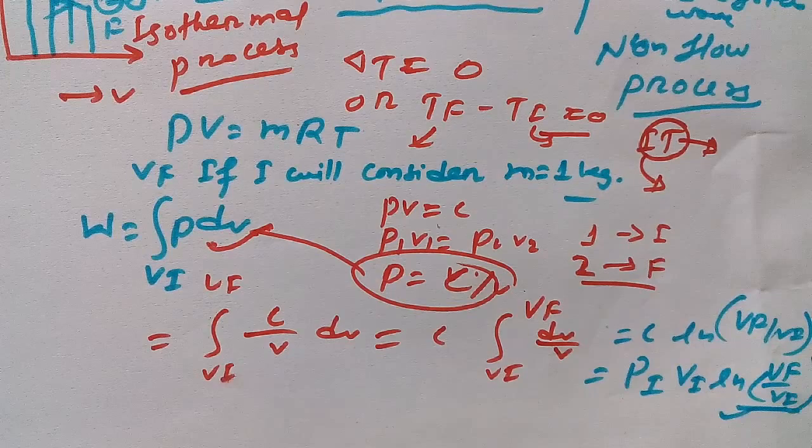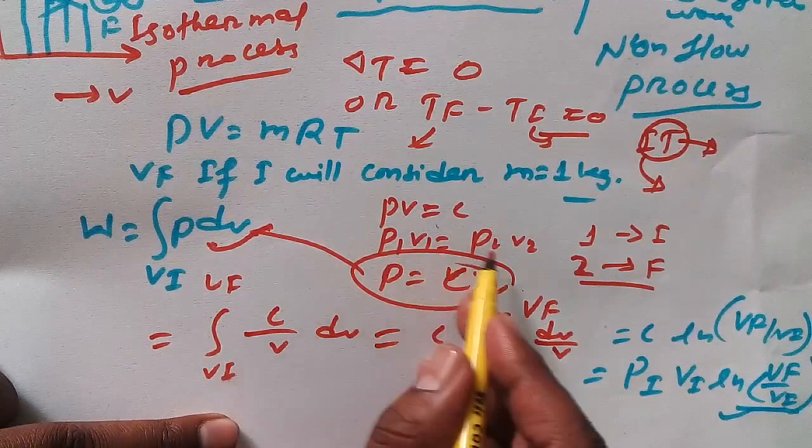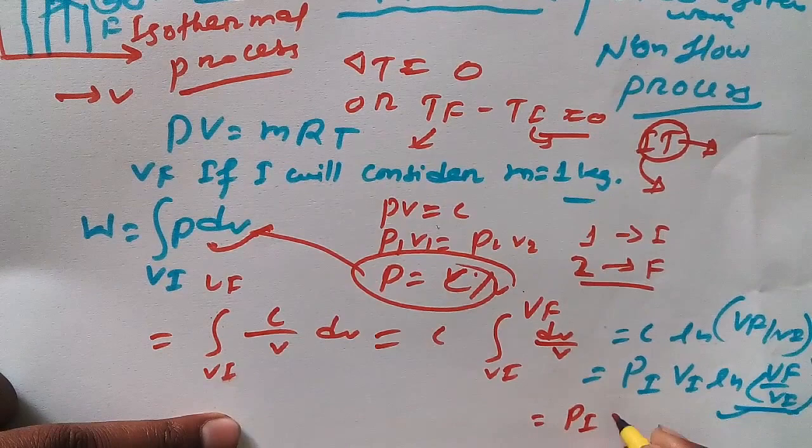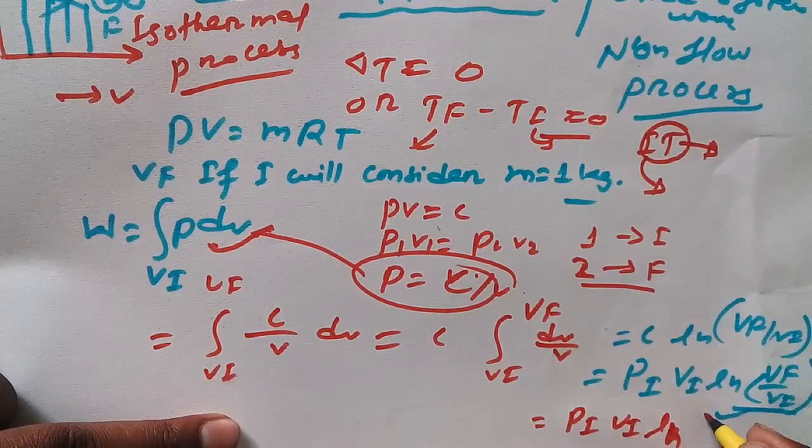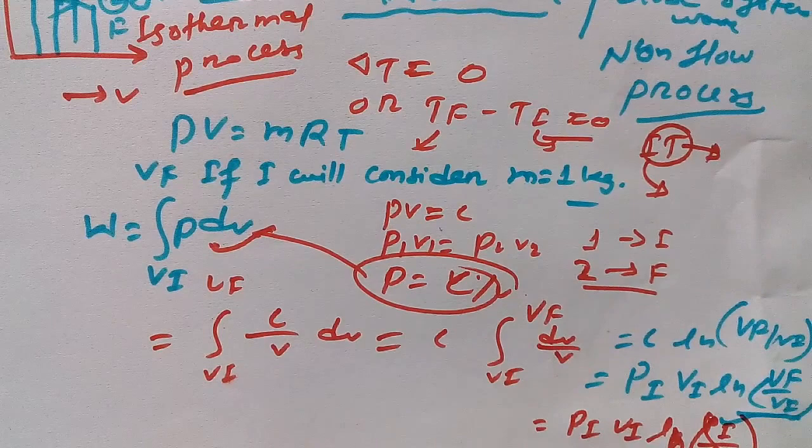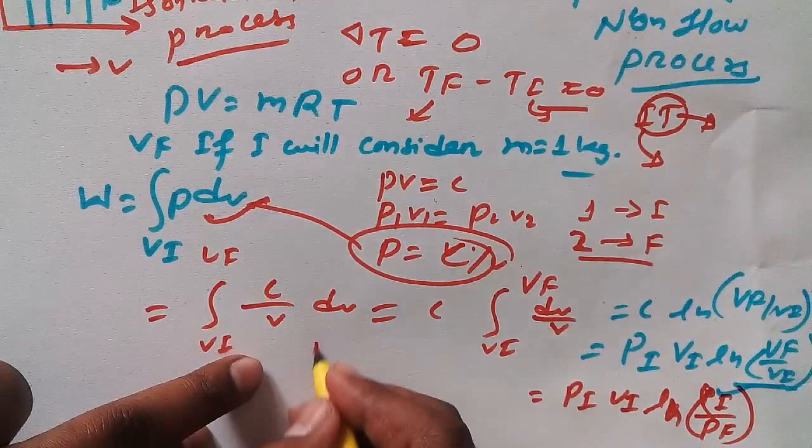And we know C is equal to what? PV, that means P initial and V initial ln VF upon VI. Also this is the formula in terms of volume. If you want to write in terms of pressure, then how you can write? That would be just nothing, because we know P1V1 is equal to P2V2. This will be reverse, so PI VI ln P initial by P final.